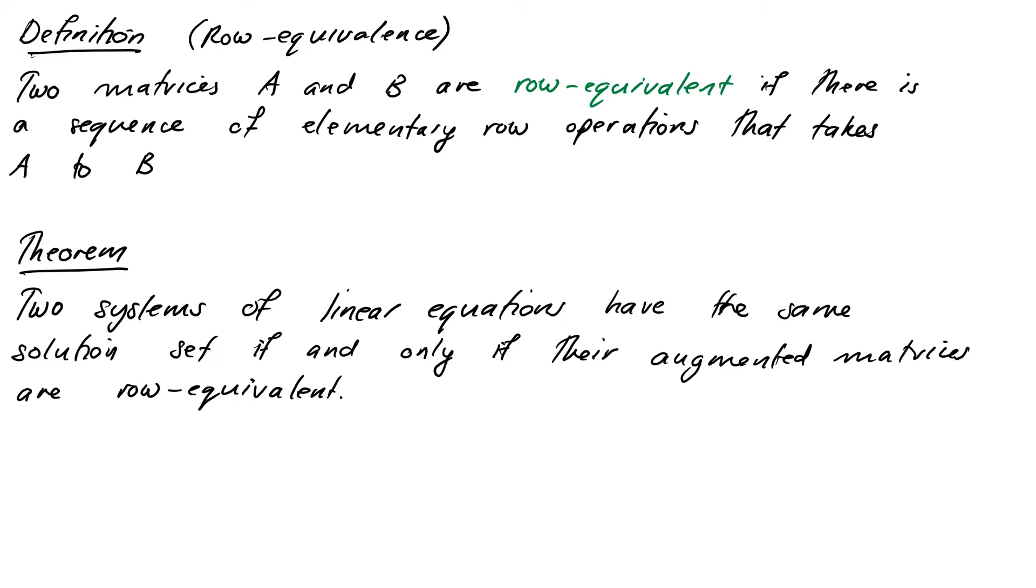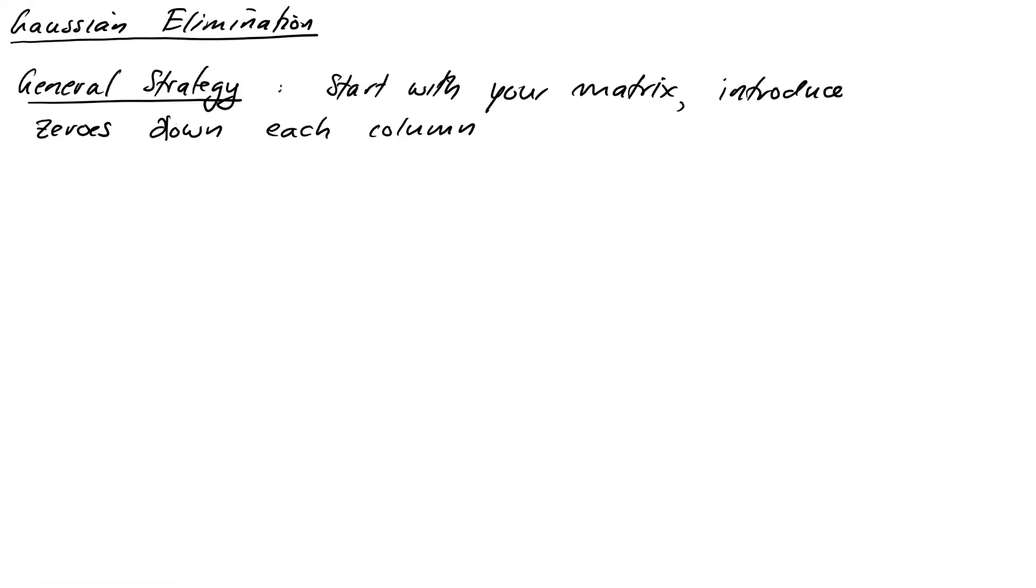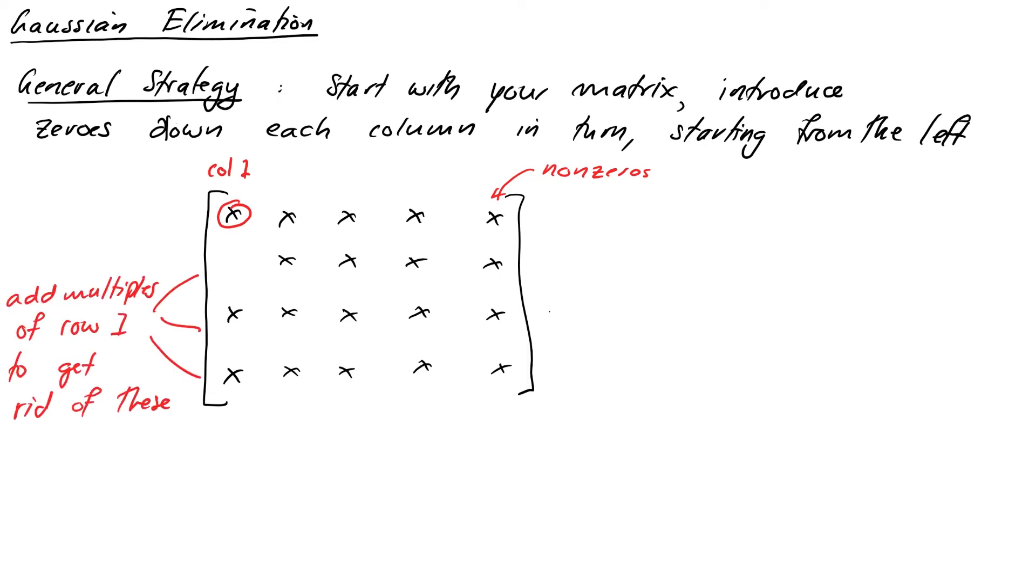Now we're ready to develop a method to reduce a matrix to a form where we can use back substitution. This method is called Gaussian elimination, named after Carl Friedrich Gauss. He was around in the late 18th to early 19th century, but the method itself was actually in use by the Chinese over 1800 years ago. The general strategy is we start with our matrix and we want to introduce zeros down each column in turn starting from the left. We start with the first column and add multiples of the first row onto all the others to make zeros beneath that first entry. You might need to do a row swap first to make sure we have a non-zero entry in the 1-1 position. While we're working on this first column we don't really care what kind of mess we're creating in the other columns. We'll just get to them and tidy them up later.